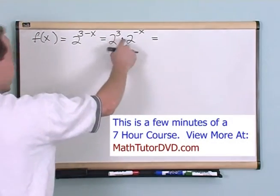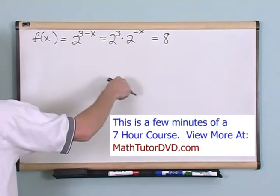Next thing I would notice is that 2 to the 3 is just simply 8. 2 times 2 is 4, 4 times 2 is 8.